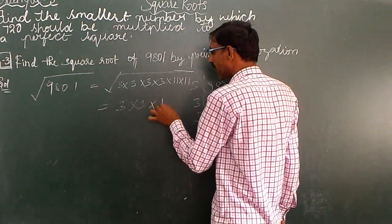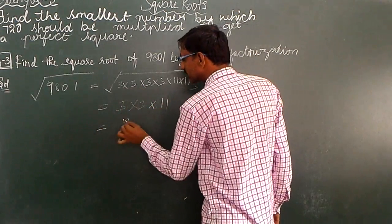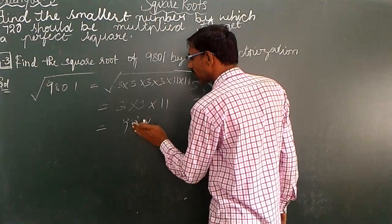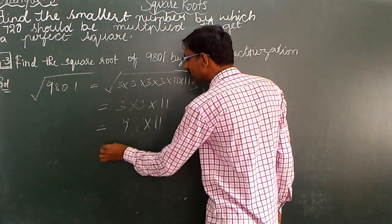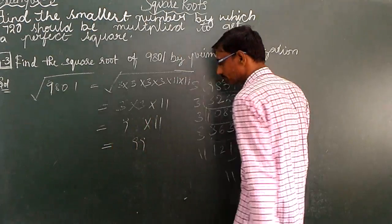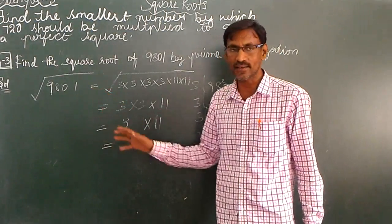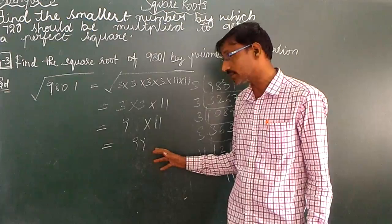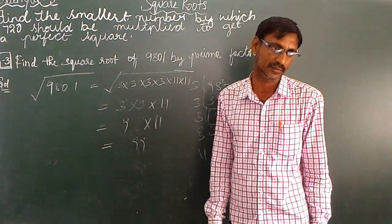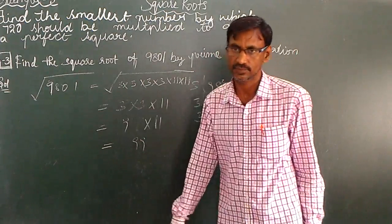Again 3. Again 11. 3 3's are 9, 9 into 11, that is equal to 109. 11 jar 99. The answer is 99.